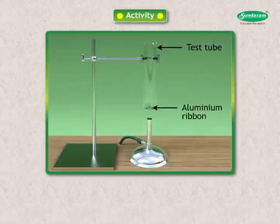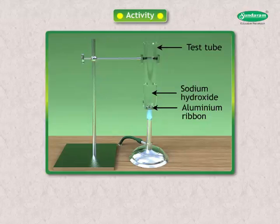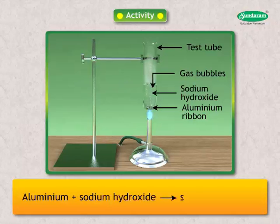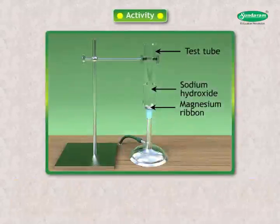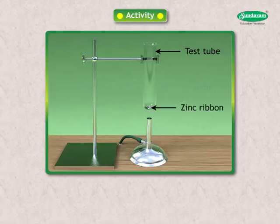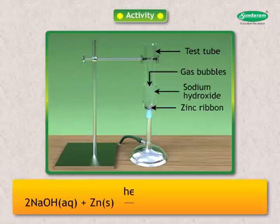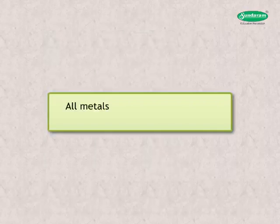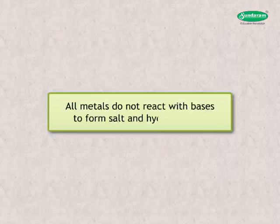Take a few pieces of aluminium ribbon in a test tube. Add 3 ml of sodium hydroxide to the test tube and warm. Repeat the process with magnesium metal. Aluminium plus sodium hydroxide gives sodium aluminate. Magnesium does not react with sodium hydroxide. The balanced reaction between zinc and sodium hydroxide is: 2NaOH(aq) + Zn(s) → Na₂ZnO₂(aq) + H₂(g). Not all metals react with bases to form salt and hydrogen gas.